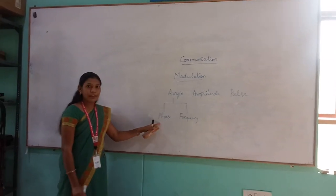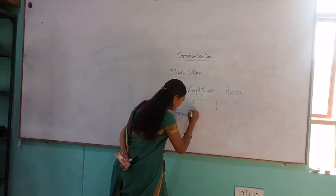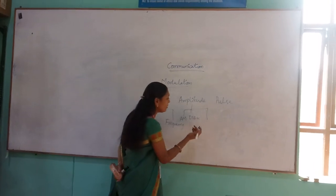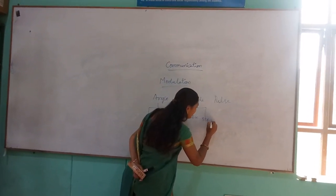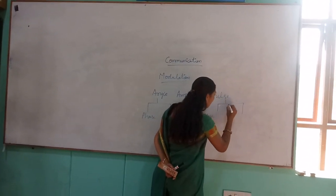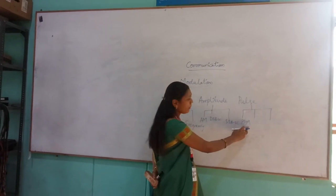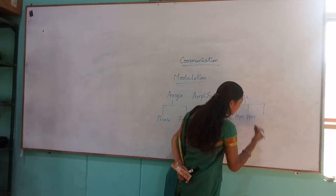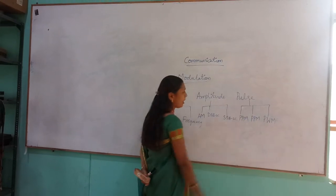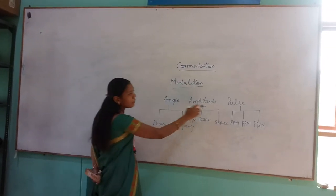When coming to amplitude modulation we will be discussing about amplitude modulation itself, and also DSBSC which is nothing but called as double sideband suppressed carrier, and also SSBSC which is nothing but single sideband suppressed carrier. In pulse modulations we are having three types — one is PAM which is nothing but pulse amplitude modulation, PPM which is pulse position modulation, and also pulse width modulation. So these are the three types of pulse modulations and under modulations we will be discussing about angle, amplitude, and also pulse modulations.